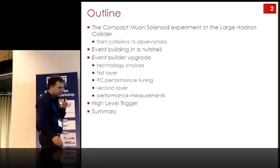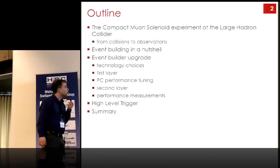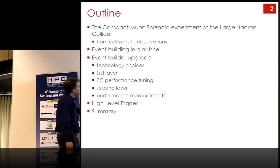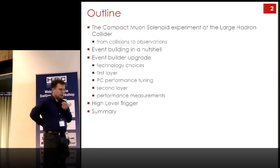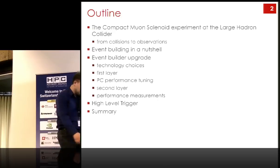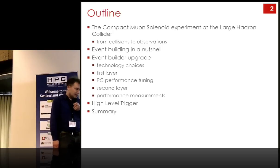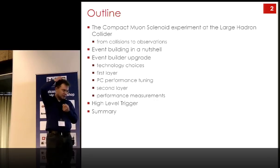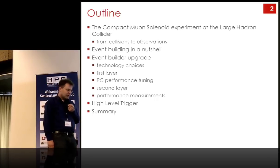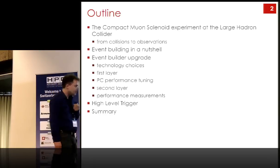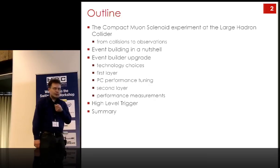The outline of the talk is: I will first say a few things about the Compact Muon Solenoid experiment at the Large Hadron Collider, how we go from collisions to observations, and what event building is. Then we'll talk about the event builder upgrade, the choices of technologies for the first layer, performance tuning, the second layer, performance measurements, the high-level trigger, and the summary.